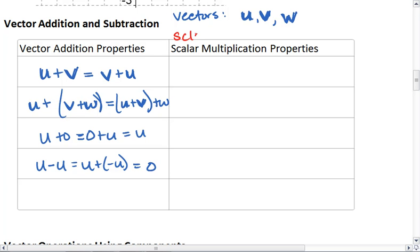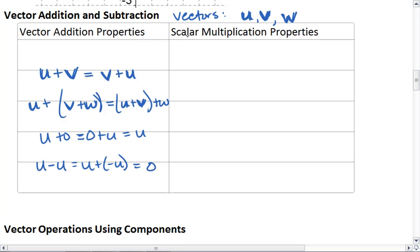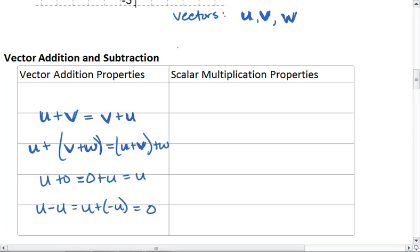We can also look at scalar multiplication. For this we'll use the scalars, so these are just numbers, but we use scalars c and k. Well, what we see then is that if we were to add u and v together, and then scale it by a scalar factor of c, this is the same as scaling u and v separately and then adding them together.